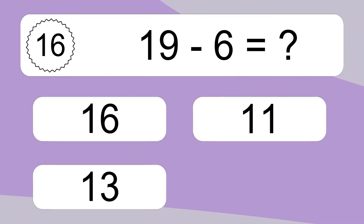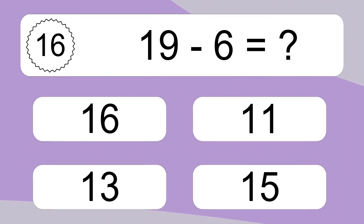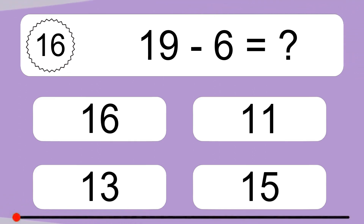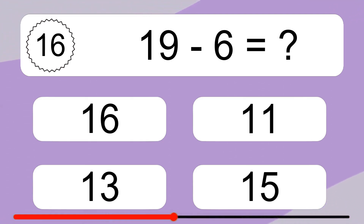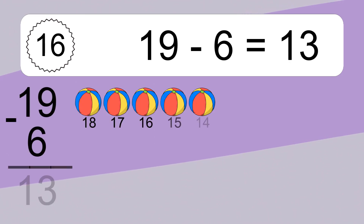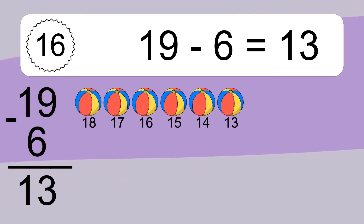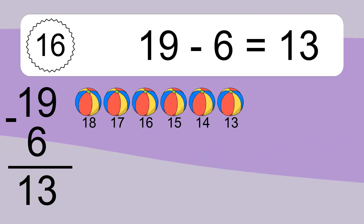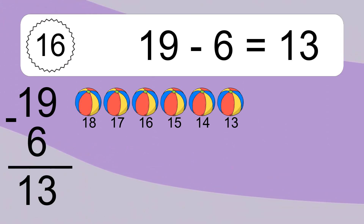19 minus 6 equals what? 19 minus 6 equals 13. Let's count it. 18, 17, 16, 15, 14, 13.